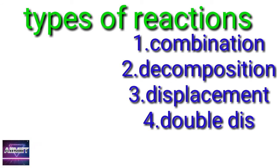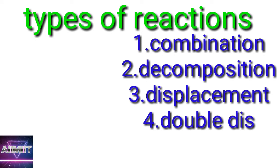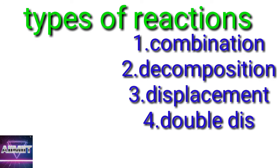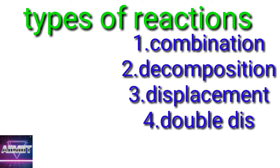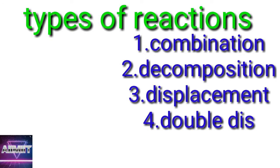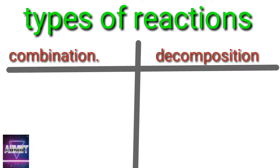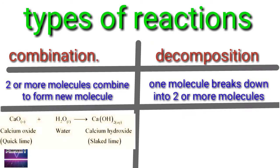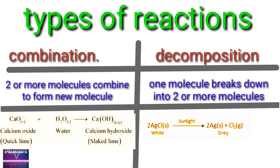The next experiment covers different types of chemical reactions: combination, decomposition, displacement, double displacement, exothermic, endothermic, oxidation, reduction, precipitation, and neutralization. However, for practical examination purposes we focus on only four: combination, decomposition, displacement, and double displacement. In combination, two or more atoms combine to form one molecule, whereas in decomposition, one molecule breaks down into two or more molecules.